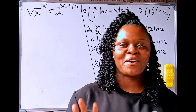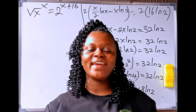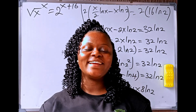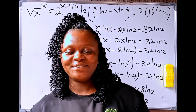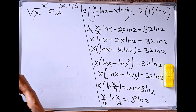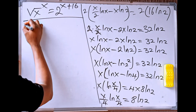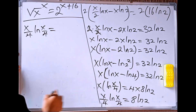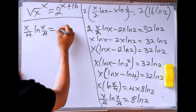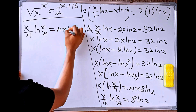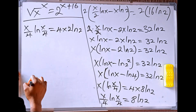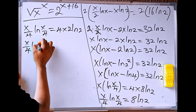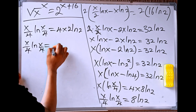Before we continue, please, if this is the first time you are coming across this channel, kindly click the subscription button. Also, click the notification bell so that whenever I upload a video, you will be notified. Thank you so much. Now, continuing: we have x divided by 4 times ln of x divided by 4 equals, which can be written as 4 times 2 ln of 2.